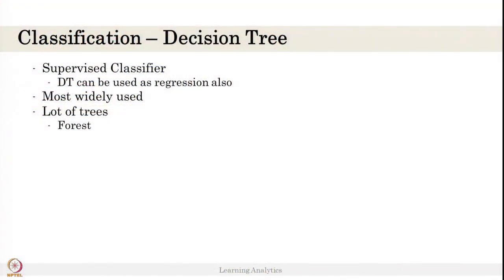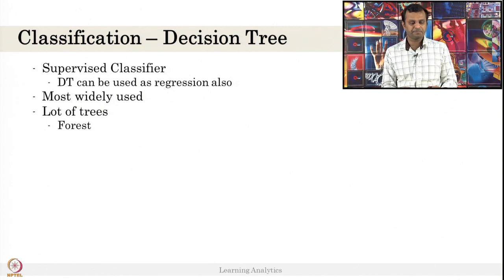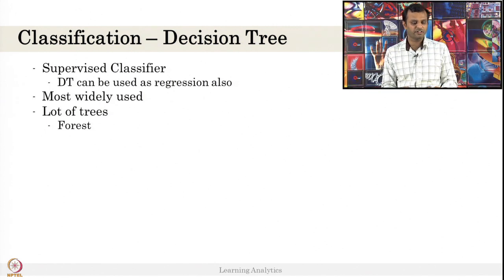Decision Tree can also be used as regression. That is why it is called CART, C-A-R-T - Classification and Regression Tree. Decision Tree can be used as a classifier. If you have multiple trees and you put the mean of them, it's a regression value, but it is a classifier and easy to do.